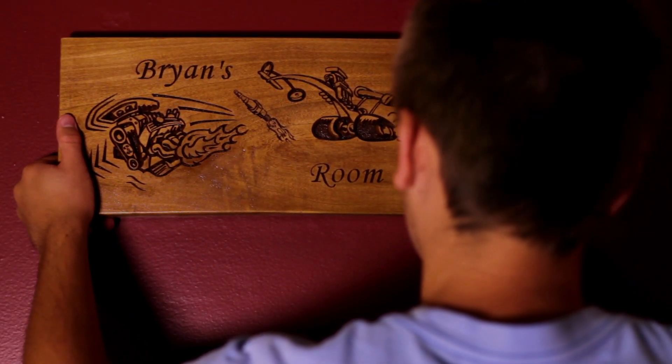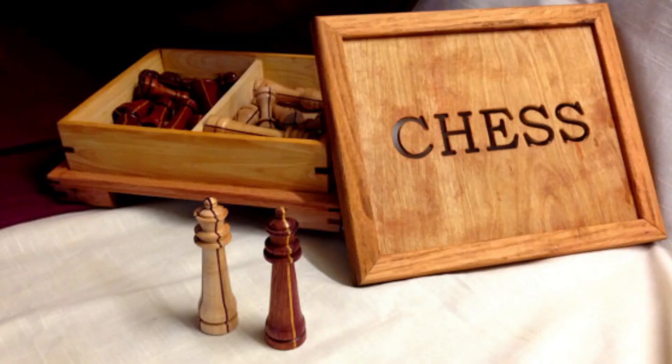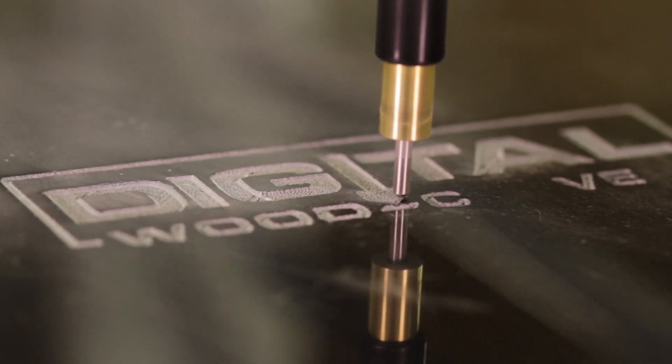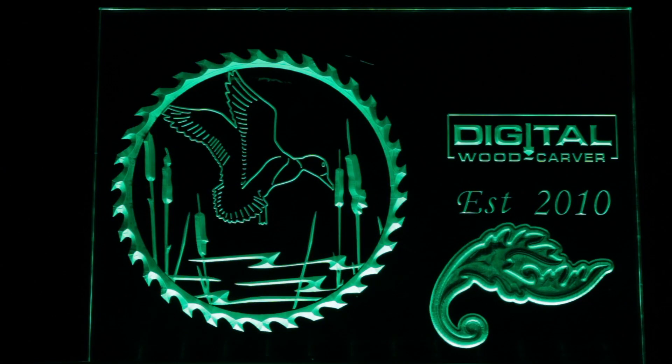The Digital Woodcarver was designed primarily to be used on wood, but it has been discovered that it can machine material like plastic, composite, marble, glass, and soft metals.